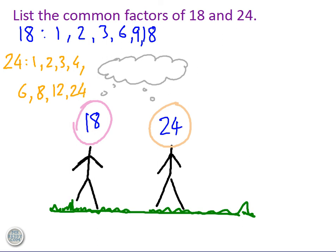How do I go about finding the common ones? Very simple. Look in both lists and work out which ones are in both lists. 1 is in both. Now that's going to be pretty obvious. Every whole number has a factor of 1, and therefore when you're trying to find common factors, 1 will always be a common factor of 2 whole numbers.